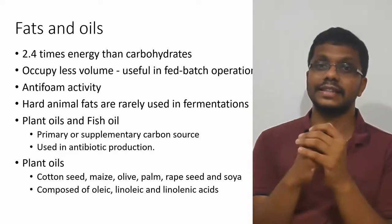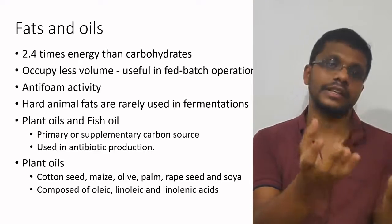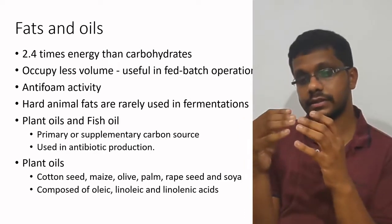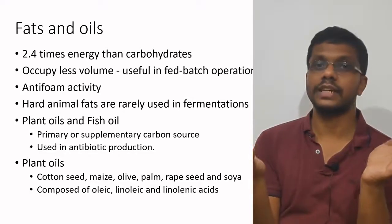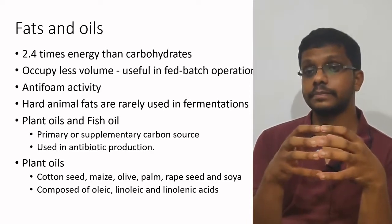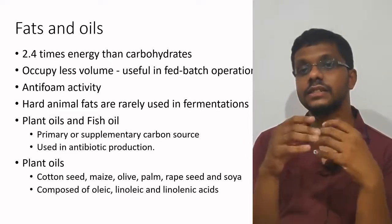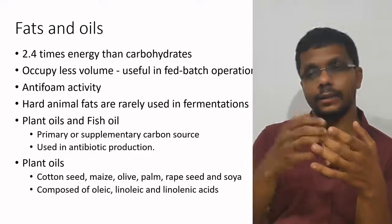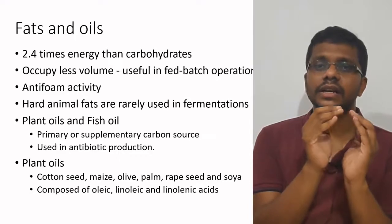Fats and oils have an energy content 2.4 times higher than carbohydrates. Since carbon sources are the most bulky compounds in fermentation media — often comprising 70 to 80 percent of the media — using carbohydrates requires very high volumes to satisfy energy requirements. With fats and oils, because they are 2.4 times more energy-dense than carbohydrates, we need only low volumes, reducing the fermenter size.